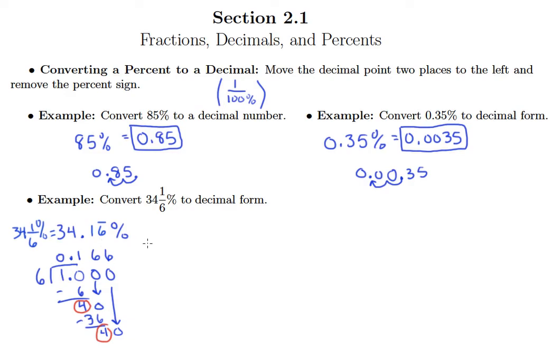And so what I can do is I can take the number thirty-four point one six bar and I can move the decimal point back two places, just like we have in the previous two examples. So thirty-four and one-sixth percent is going to equal zero point three four one six with a bar. And that's how we would write this number in decimal form.